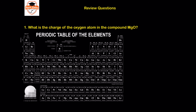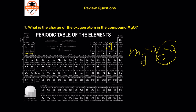Question one: what is the charge of the oxygen atom in the compound MgO? Looking at the periodic table, magnesium has two valence electrons, so it will form a +2 charge by losing those two valence electrons. Oxygen is two electrons away from a full valence shell, so it will steal two electrons from magnesium and form a −2 charge. The +2 magnesium and −2 oxygen come together to form magnesium oxide, so the charge on the oxygen atom in MgO is negative two.